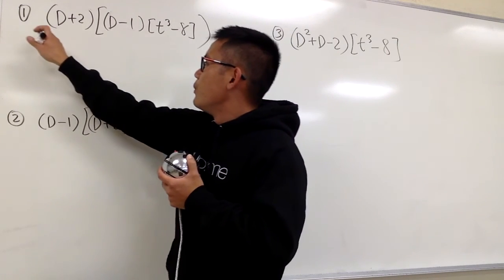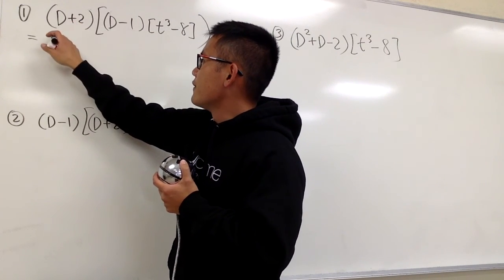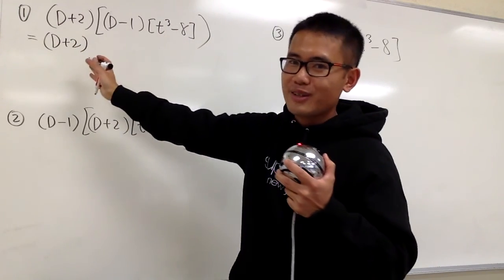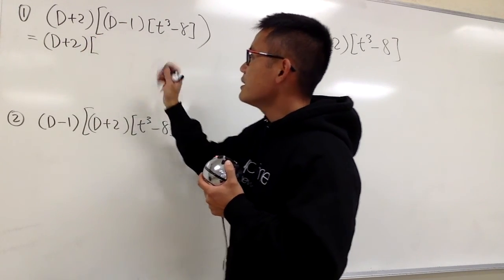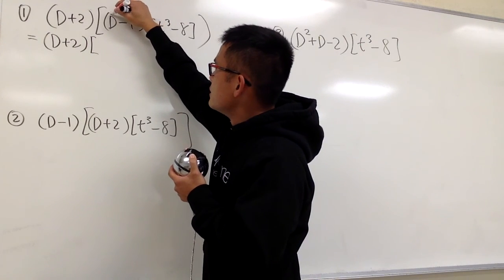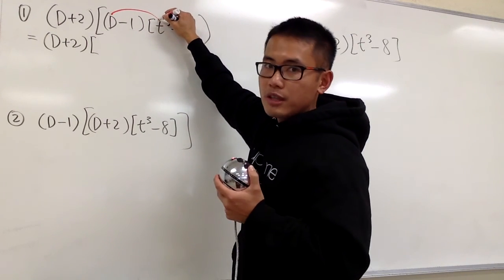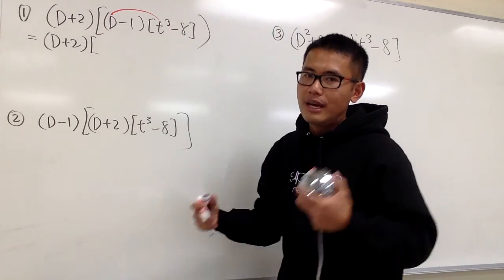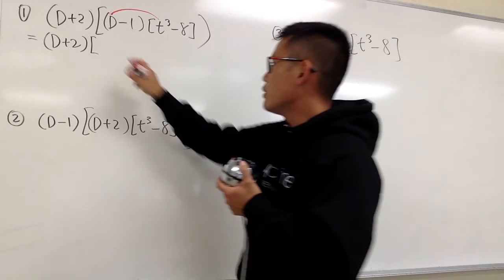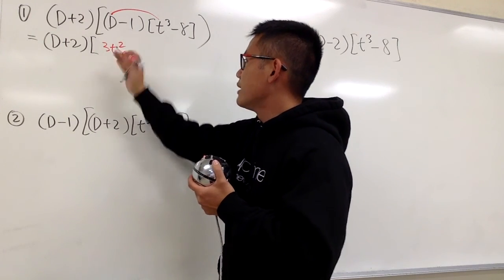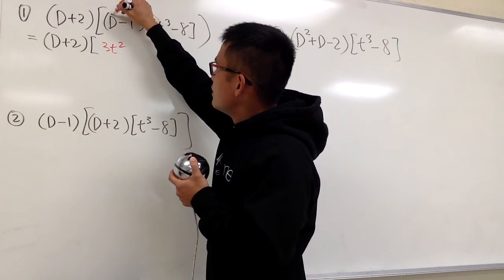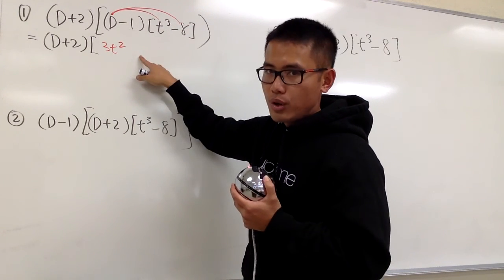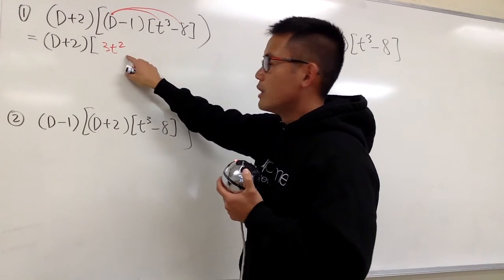Let's look at the first one. I'll write down the first (D+2) on the outside — this stays on the outside while we focus inside first. We pair D with t to the third power, which means we differentiate t³. The derivative of t³ is 3t². We also differentiate negative 8, and we get 0, since it's just a number.